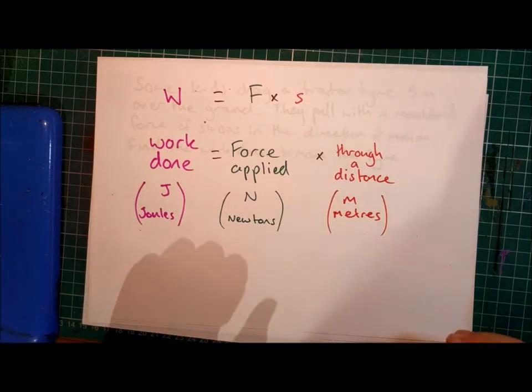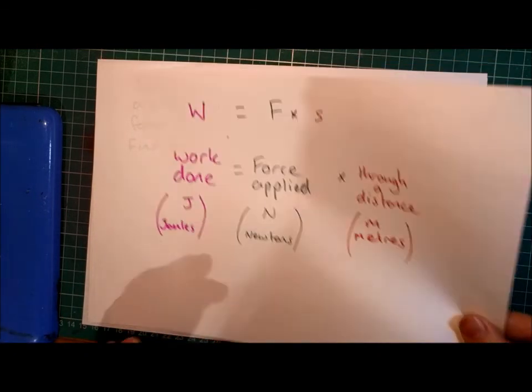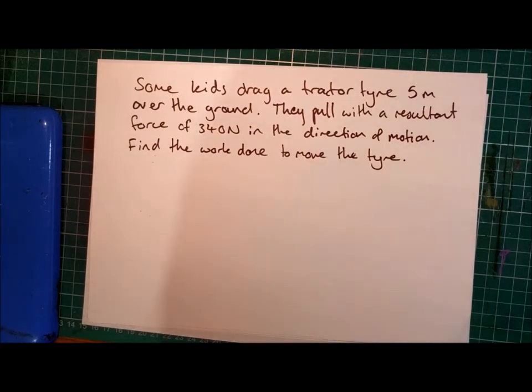Now I'm going to show you an example of a question that requires this equation. Some kids drag a tractor tyre five metres over the ground. They pull with a resultant force of 340 newtons in the direction of motion. Find the work done to move the tyre.